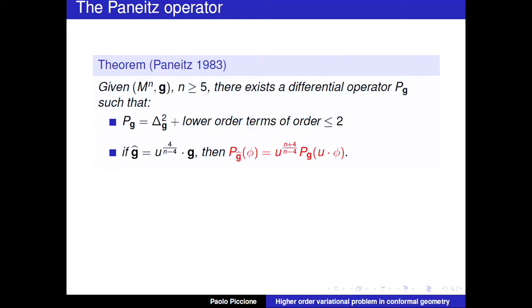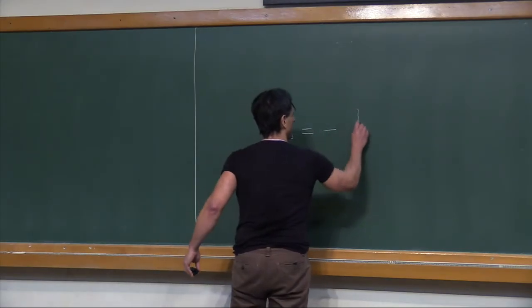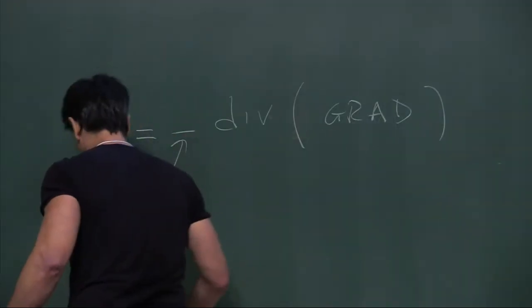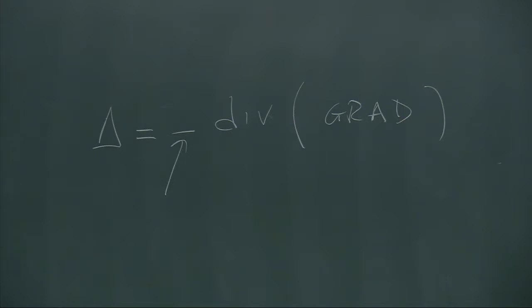The good thing about this operator is that if you take P associated to a conformal metric and apply it to some function, you get a conformally invariant expression. What is not clear is whether minimizers for the associated quadratic functional are positive — that is a problem. For R^n, it is just Δ². For the sphere, it is a product: Δ times (Δ minus a constant). My Laplacian convention is minus divergence of gradient, so it has positive spectrum.